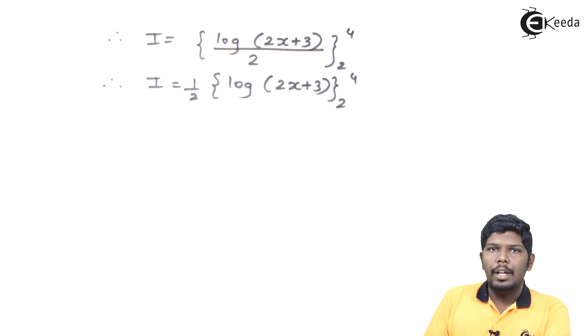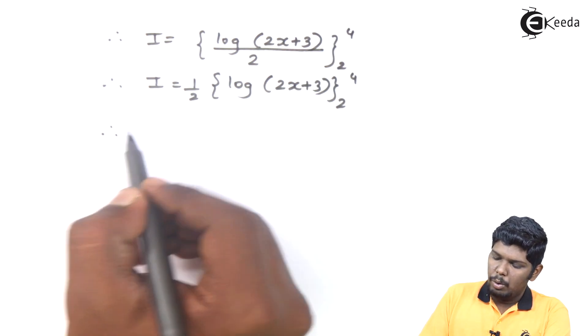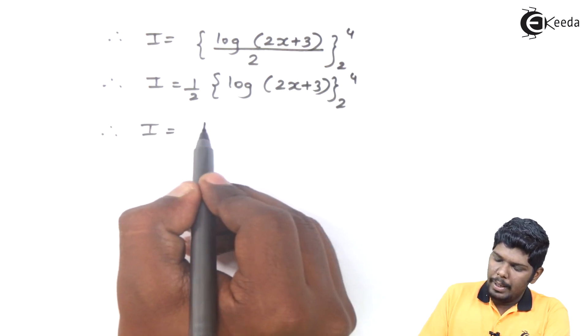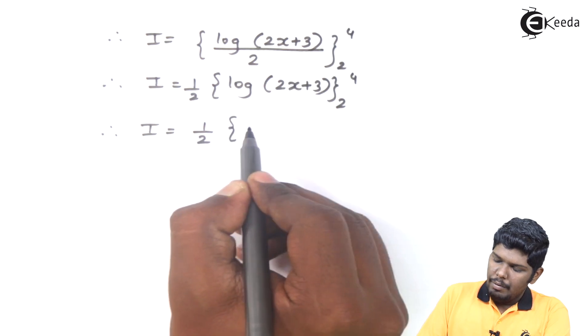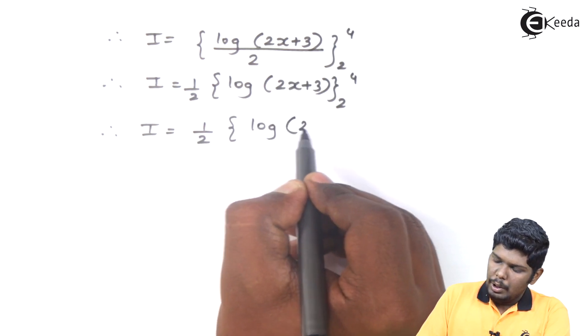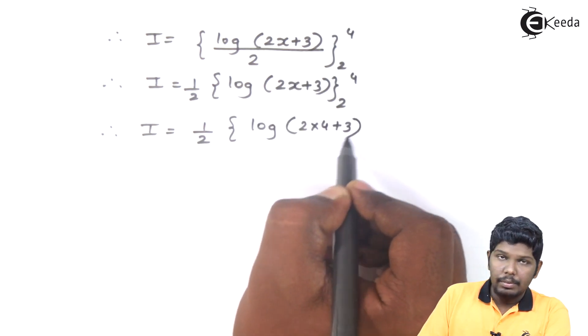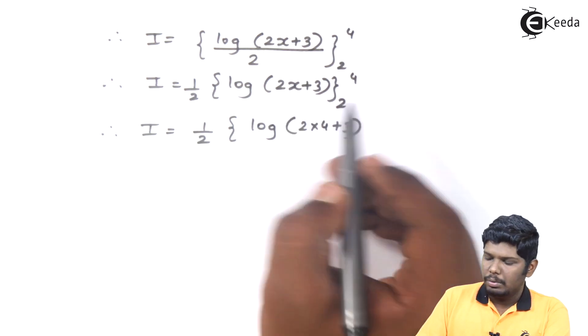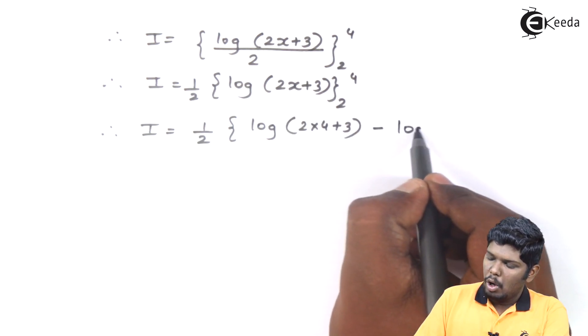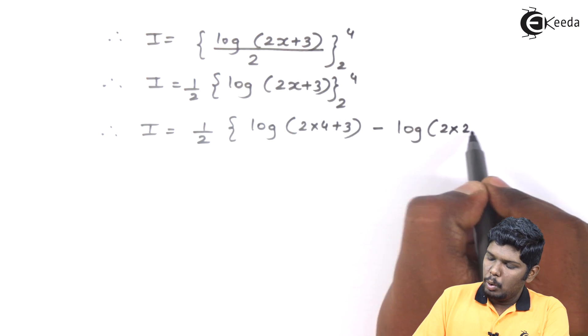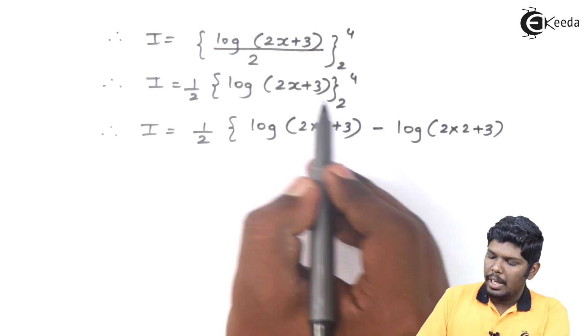Now, let us substitute the upper and the lower limit in terms of x. Therefore, I is equal to 1 by 2, we have log of 2 into 4 plus 3, substituting x as 4 minus log of 2 into 2 plus 3, substituting x as 2.